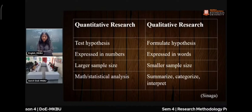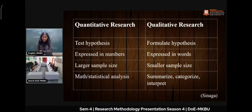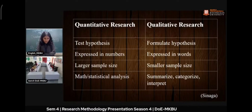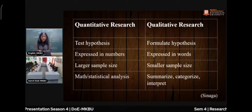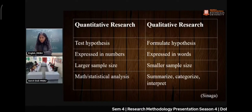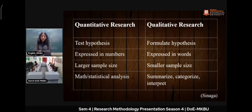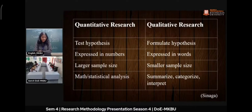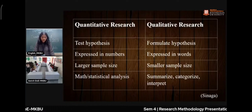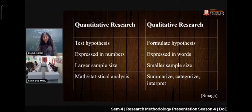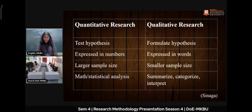Qualitative research involves studying a phenomenon, ideas, and formulating hypotheses. Quantitative research tests hypotheses and its formulations are expressed in numbers, as quantity is always associated with numbers, whereas qualitative research is expressed in words.